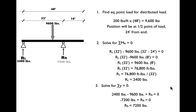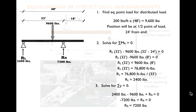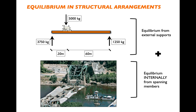Summing vertical forces: 2,400 pounds up plus RR minus 9,600 pounds down = 0, so RR = 7,200 pounds. The two reactions are quite different — one is almost three times the other — because the cantilever pulls the centroid of the distributed load closer to the right reaction. The closer a load gets to a reaction, the more that reaction has to carry.